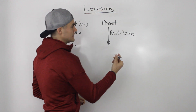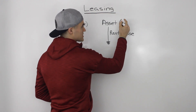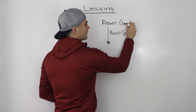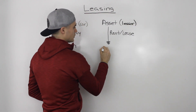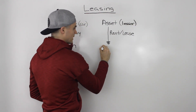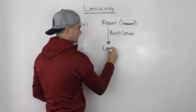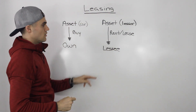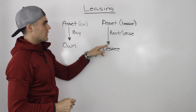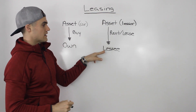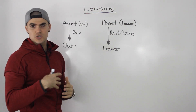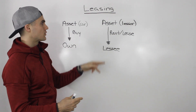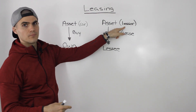Now the person that you are leasing from — the person who owns the asset — they're called the lessor. And then you, the person who is renting the asset, are called the lessee. So you rent the asset from someone who owns it, and now you have access to the use of that asset for a certain period of time, and once you're done you return it to that owner.